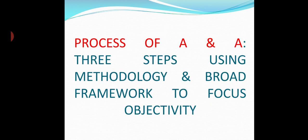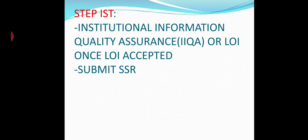The process of assessment and accreditation involves three steps based on methodology and broad framework. The first step is submitting institutional information for quality assurance, that is IIQA or letter of intent. After this IIQA is accepted, SSR — that is self-study report — must be submitted. It means SSR must be ready before IIQA is prepared.